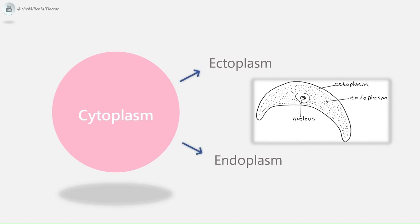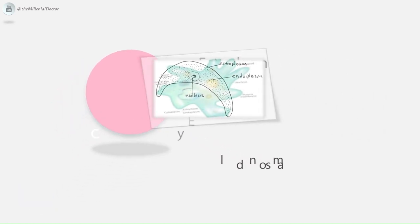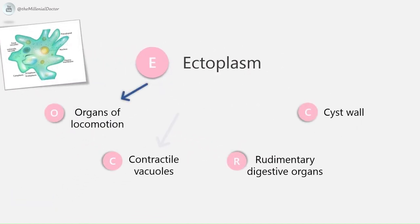The cytoplasm is divided into two types: ectoplasm and endoplasm. Ectoplasm is the external hyaline portion, and endoplasm is the internal granular portion. The functions of ectoplasm are protective, locomotion, and sensory, whereas the functions of endoplasm are nutritive and reproductive.